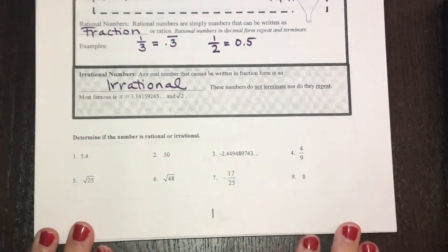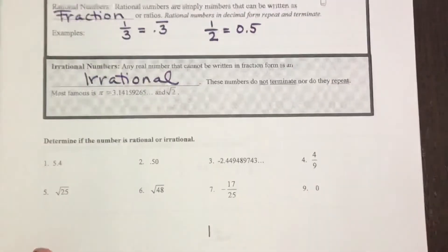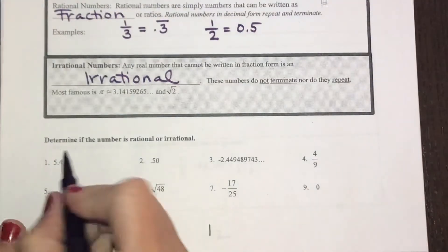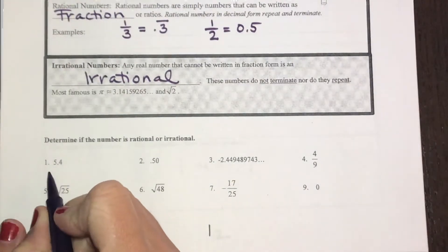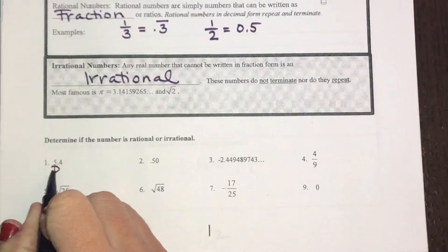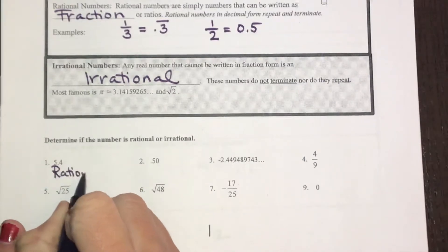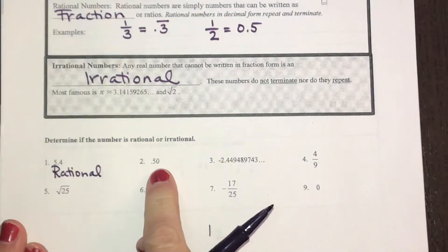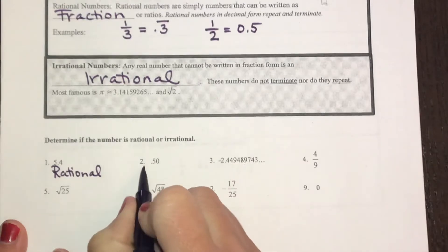Taking a look at these numbers down below, I'm going to go through each of them. For the first one here, this decimal stops which would be rational. This decimal also stops which would be rational.